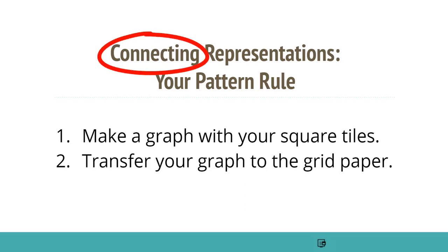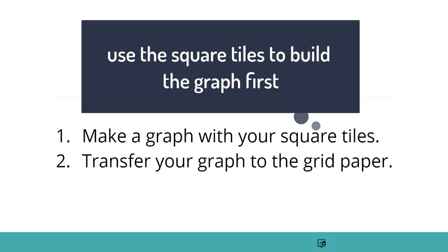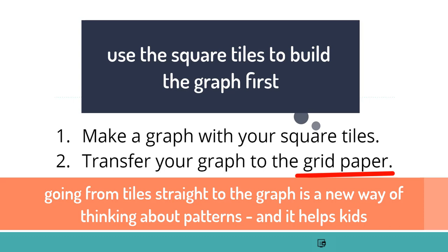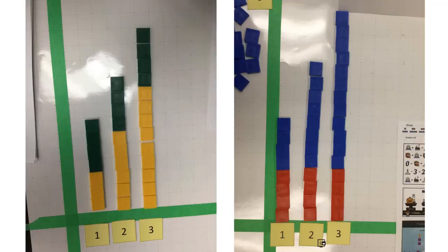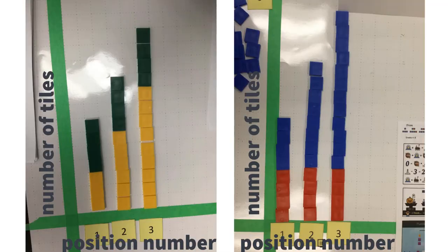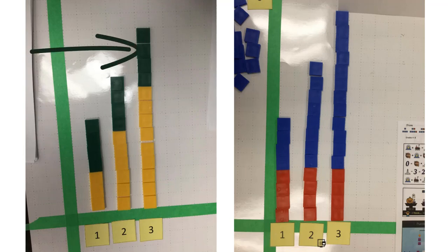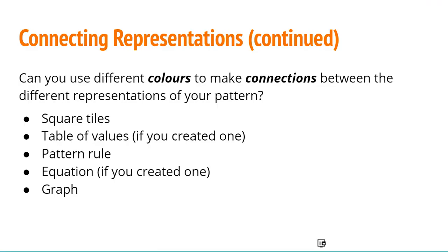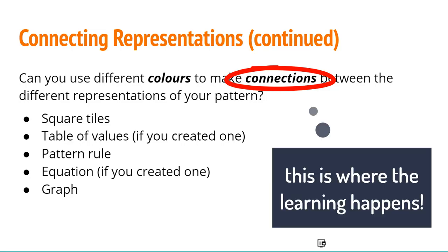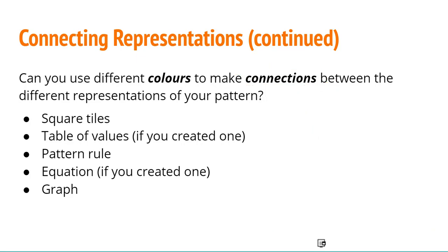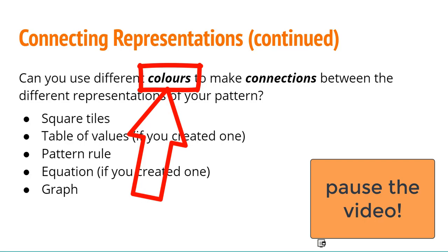Finally, we want to actually connect different representations. Take the pattern rule that you made and make a graph with those tiles. You may want to then transfer that graph to grid paper — square tiles and the squares on chart paper are actually the same size, so that works really well. Some groups placed their constant on the top and their multiplier on the bottom, while others did the reverse. Once you have created your graph, it's really important that students see the connections between the graph and the equation. They may have used a table of values also to understand their pattern, and so we want to make connections between these. The real learning for students is when they can make connections between the different representations. Pause the video and see how you might use different colors to make connections between all of those representations.